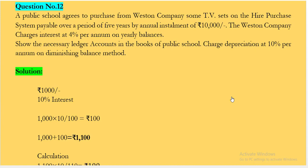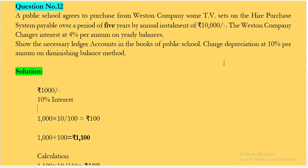Public school agrees to purchase from Western Company some TV sets on a hire purchase system, payable over a period of 5 years, by annual installments of Rs10,000. The Western Company charges interest at 4% per annum on yearly balances. Show the necessary ledger accounts in the books of Public School. Charge depreciation at the rate of 10% per annum on the diminishing balance method.